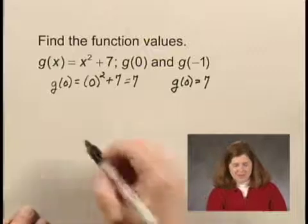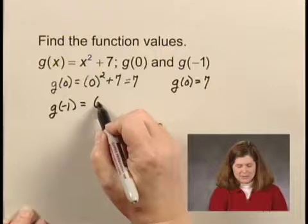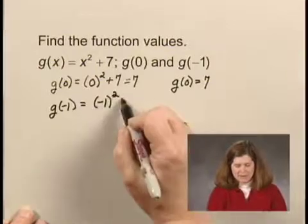To find g of negative 1, I substitute negative 1 for x. I'm going to put it in parentheses and then square it. Plus 7.